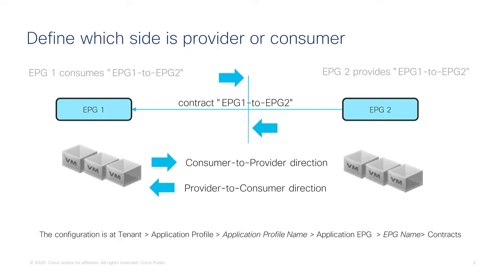Establishing which EPG is a provider can be very obvious — for example, web servers providing services to clients in another EPG. Or it could be something you need to decide when an EPG has servers providing certain ports while also consuming services from the other EPG. In that case the choice could be arbitrary, but it's necessary to choose which side you call a provider and which side you call a consumer.